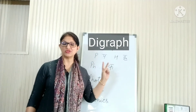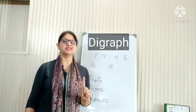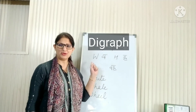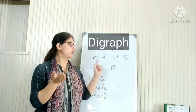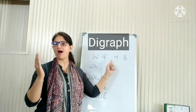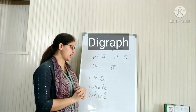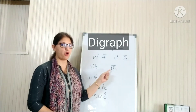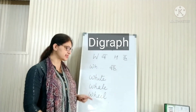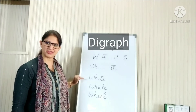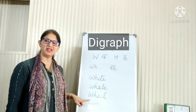Digraphs are two letters. Digraphs make one sound. For letter W, we say 'wh'. For letter H, we say 'ha'. Put the letters together, they make a new sound — Wh! Can you hear the wh sound in these words? White. Wheel.